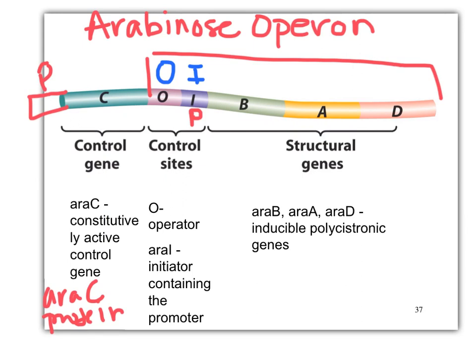The control sites are the operator, and then the initiator, which also contains the promoter. We can call this the initiator with the promoter — that's why there's a little P there. The promoter is where sigma and RNA polymerase land.